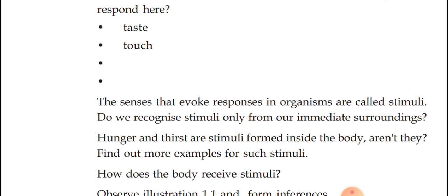For example: there is a hot iron box. A person goes and touches it — immediately he will withdraw his hand, otherwise his hand will be burned. He has done a response. What is the response? He withdrew his hand from the iron box. What is the reason? There was a stimuli — a high temperature in the iron box. That heat is termed as the stimuli, and withdrawing of the hand is termed as the response.